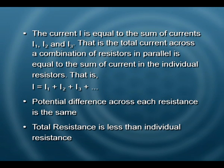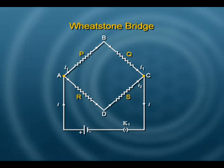Resistances can also be combined in series and parallel together. One special circuit used in the lab is the Wheatstone bridge, which comprises 4 resistances. It is arranged so that there are two branches — one branch has two resistances P and Q in series, and another branch has two resistances R and S in series. Both branches are connected in parallel across points A and C. This forms a Wheatstone bridge.